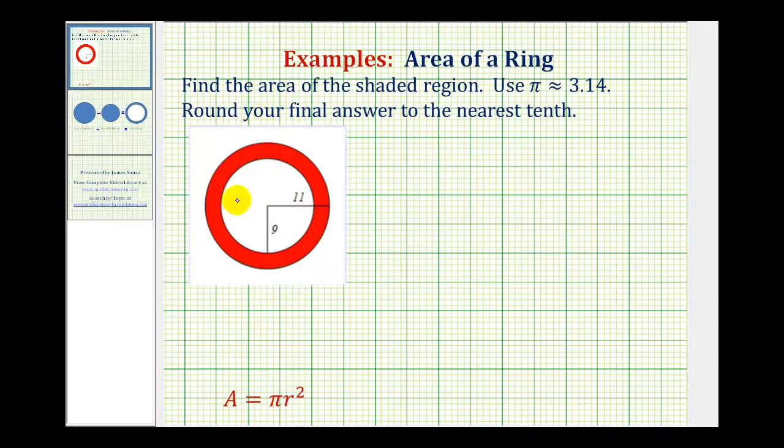So looking at our diagram, notice how the large circle has a radius of eleven units, the length from here to here, and the small circle has a radius of nine units from here to here.